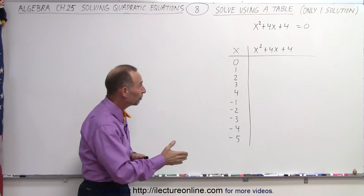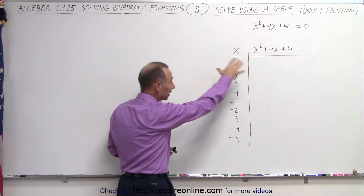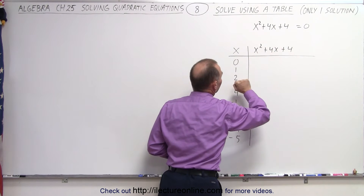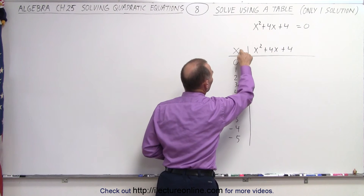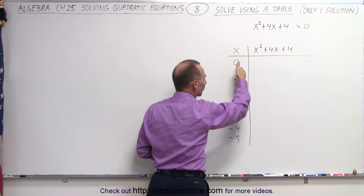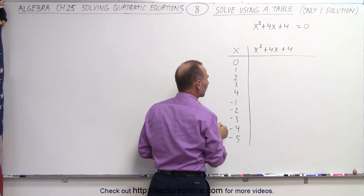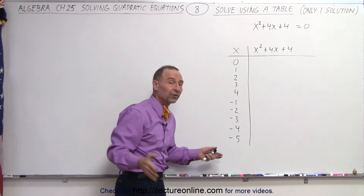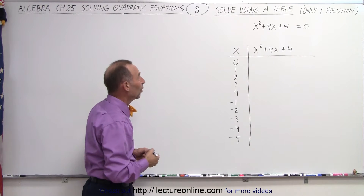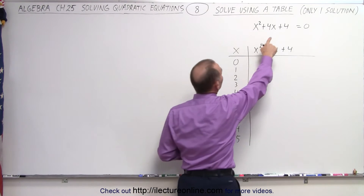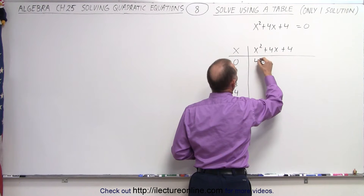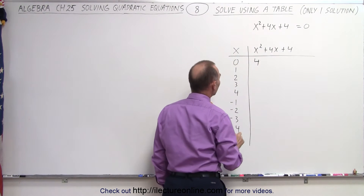So we set down the table here. We have the left side of the quadratic equation, and we're going to plug in values for x. We start at 0, first going in a positive direction and then a negative direction to see what happens. When we plug in 0, the left side equals 4, which means there's no solution there.